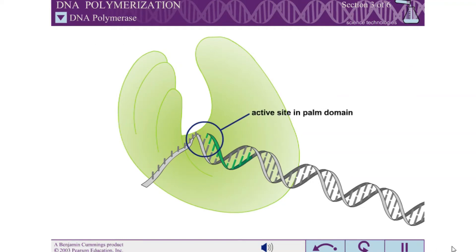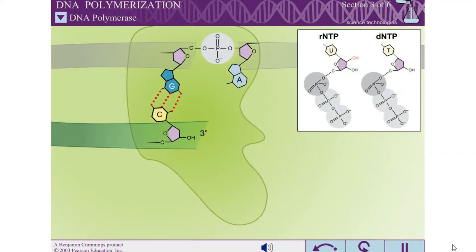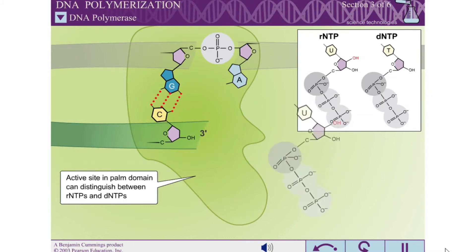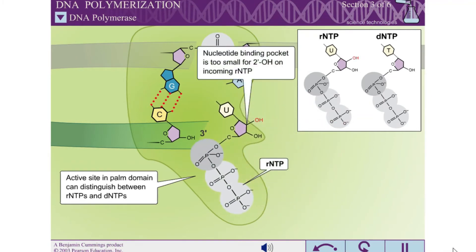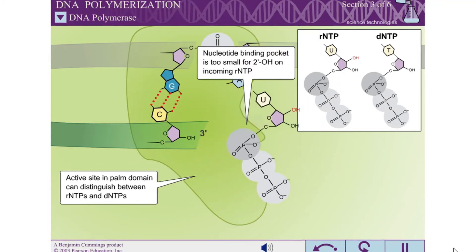The palm domain houses the active site for DNA synthesis. The active site of DNA polymerase is able to distinguish between RNTPs and DNTPs, even though RNTPs are present at approximately 10-fold higher concentration in the cell. The nucleotide binding pocket is too small to accommodate the presence of a 2 prime hydroxyl on the incoming nucleotide, allowing the polymerase to sterically exclude RNTPs.